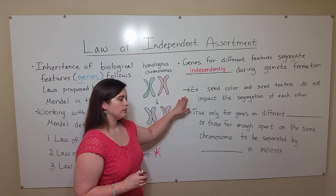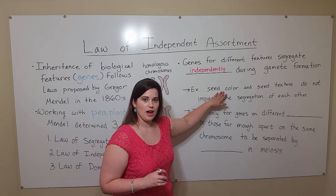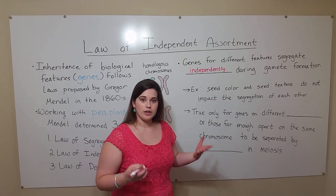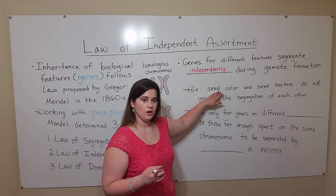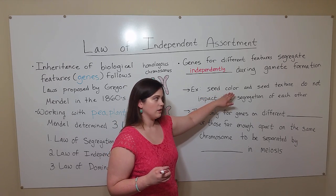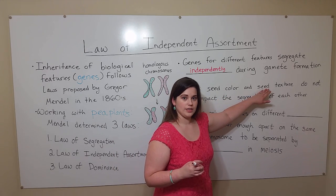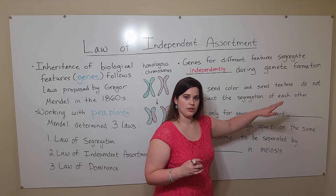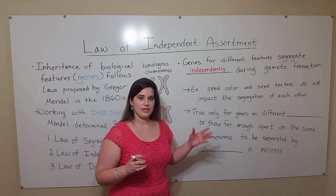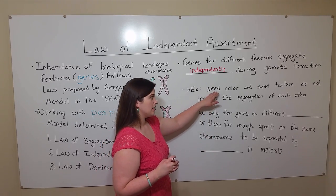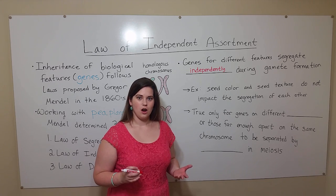So for example, in Mendel's classic example of pea plants, seed color: you have alleles, alternative forms of genes. So you have an allele for the seeds being yellow, or the seeds being green as the other allele. Also the seed texture — there's an allele for the seeds being smooth and another allele for them being wrinkled. And these things segregate independently into gametes, so the alleles for seed color don't affect how the alleles for seed texture are inherited.